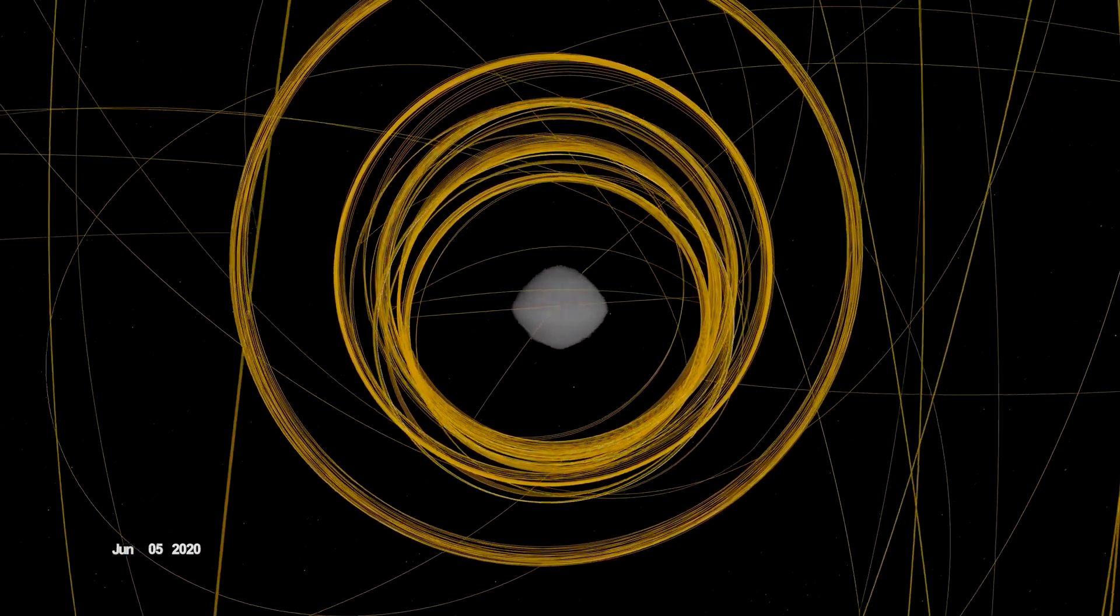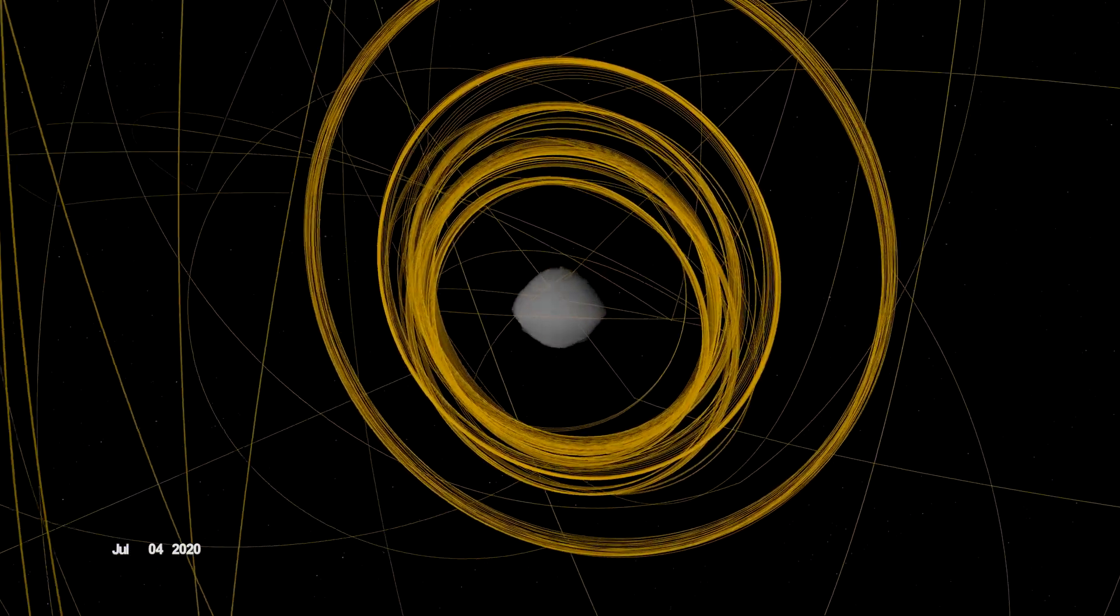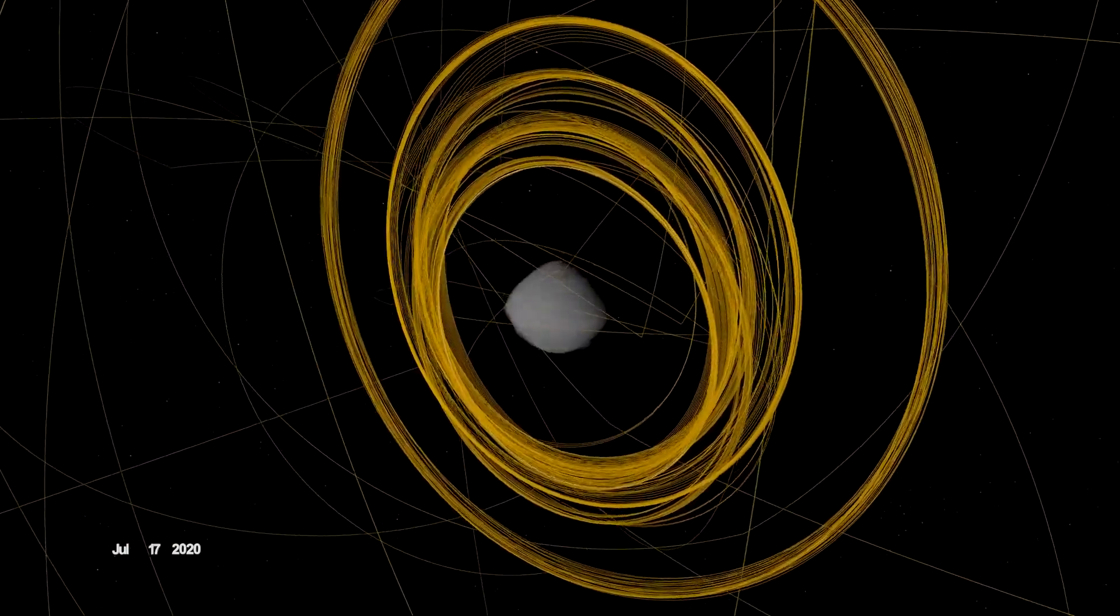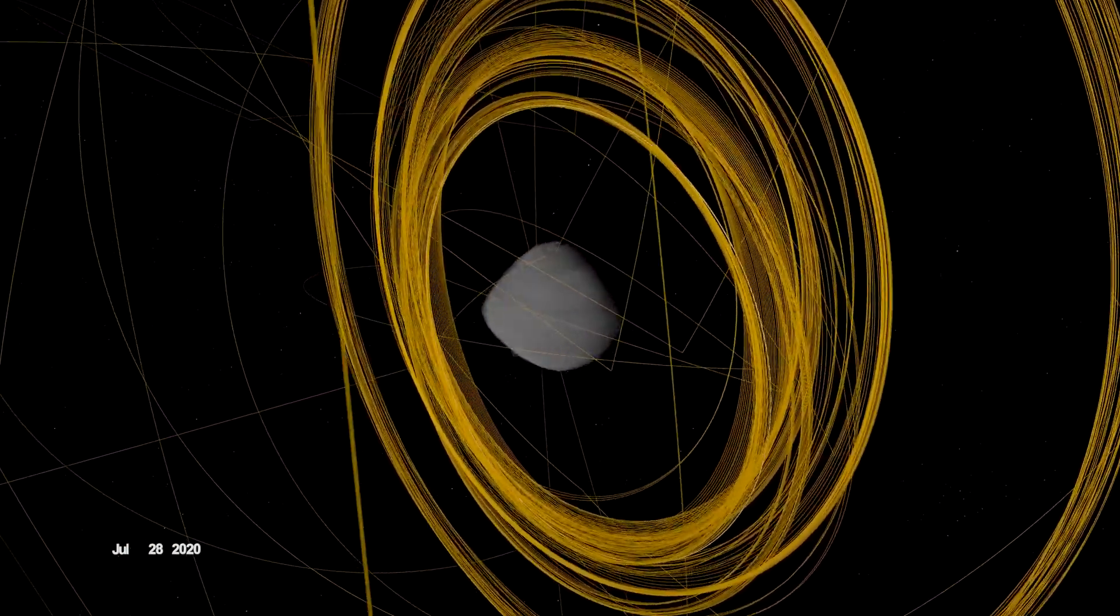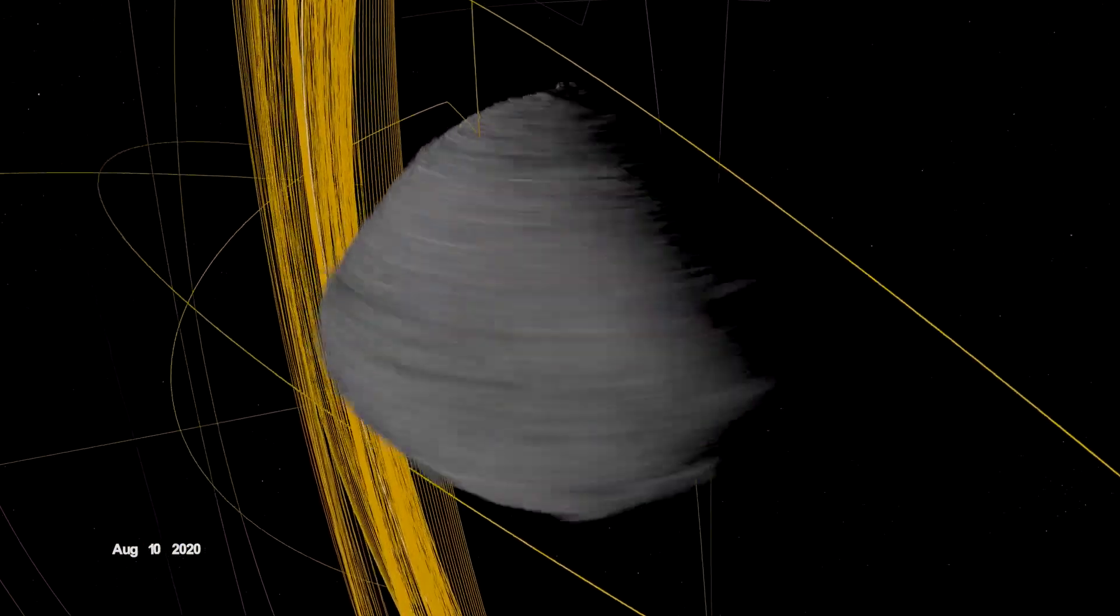After the checkpoint rehearsal, OSIRIS-REx flew one final reconnaissance sortie over site Osprey. Then it made a series of high-altitude maneuvers while rebooting its onboard processor and preparing for its second rehearsal of the sample collection event.